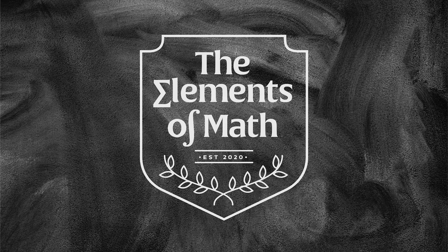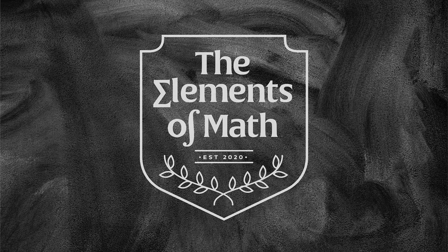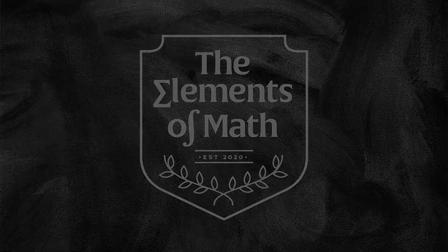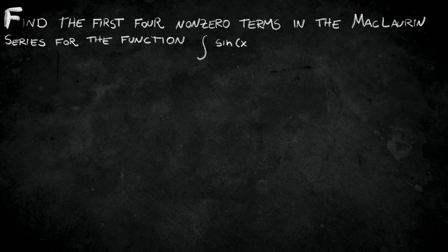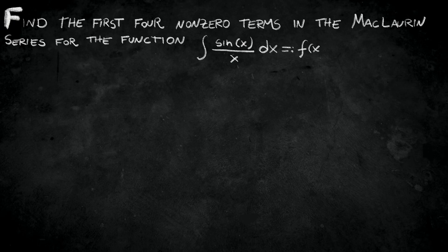Hi everyone. Let's solve the following problem. Find the first four non-zero terms in the Maclaurin series for the function integral of sine of x over x dx. Let's call this f of x. Also, let's define that f of 0 is equal to 0.